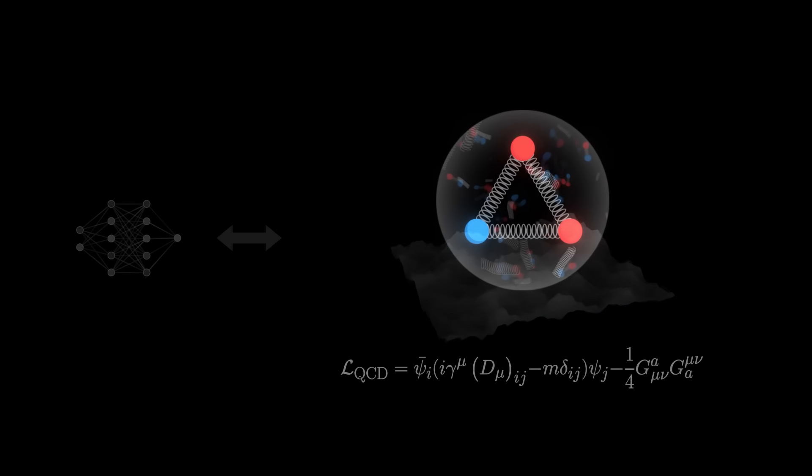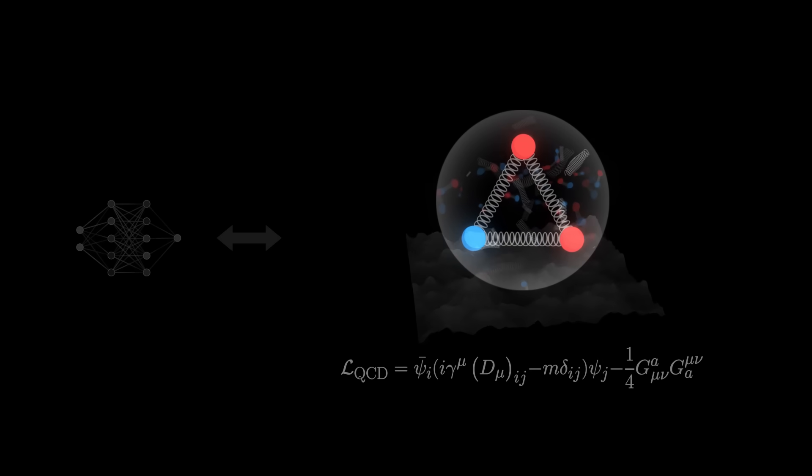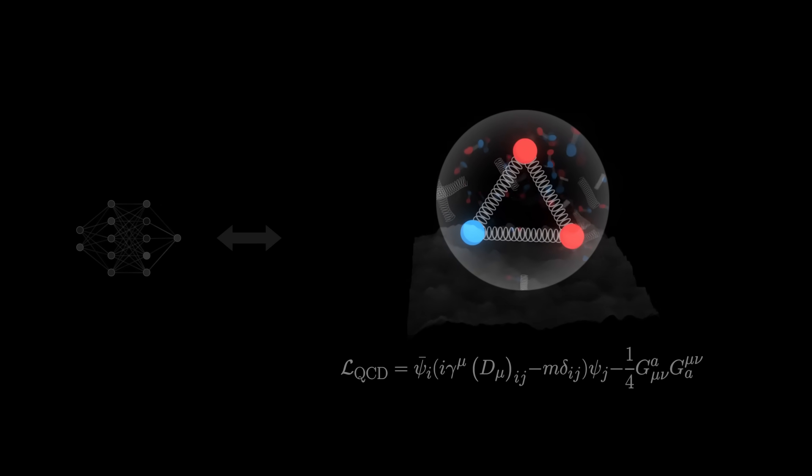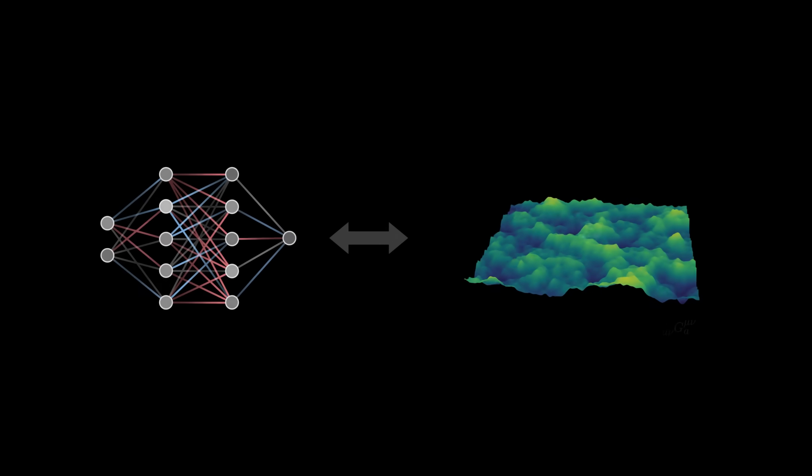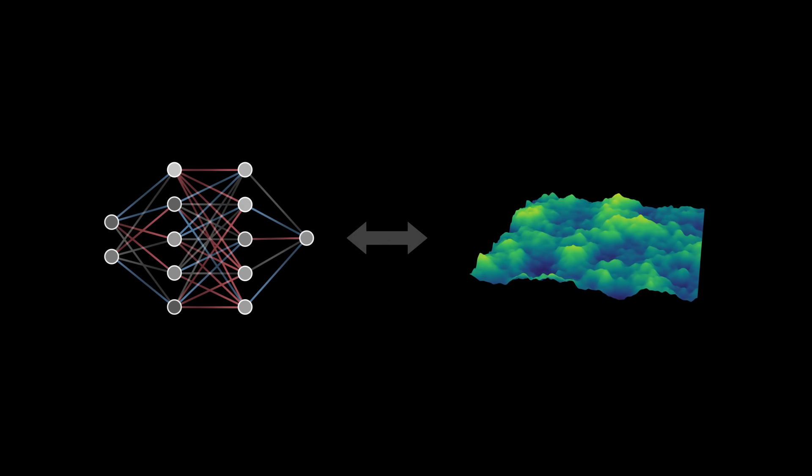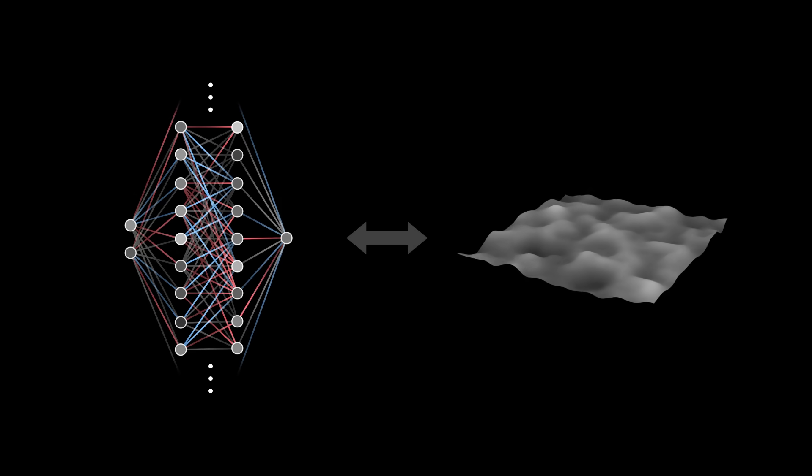For instance, simulating the behavior of quarks within the nucleus of atoms is already a colossal challenge even for the most powerful supercomputers. Some physicists now believe that neural networks could offer a new way of approaching these problems. They can already reproduce the statistics of a free field without interactions.